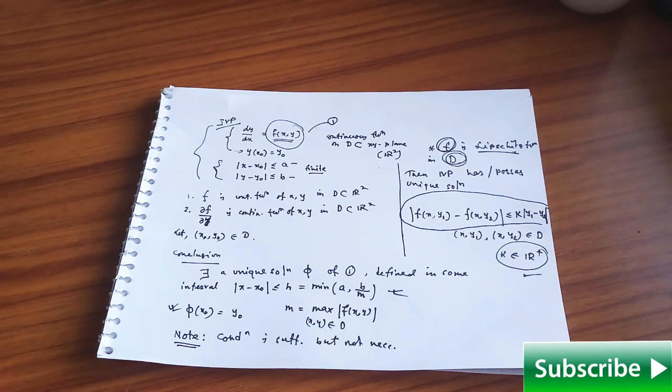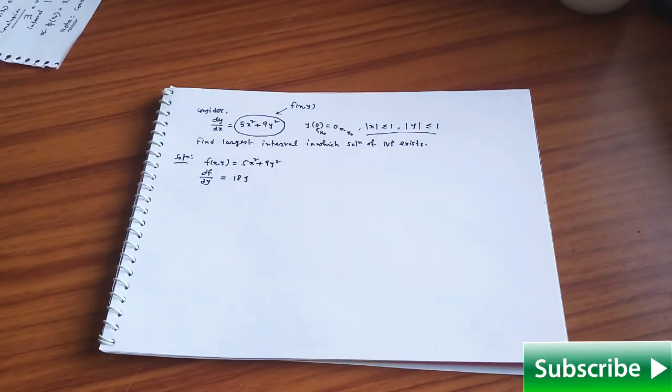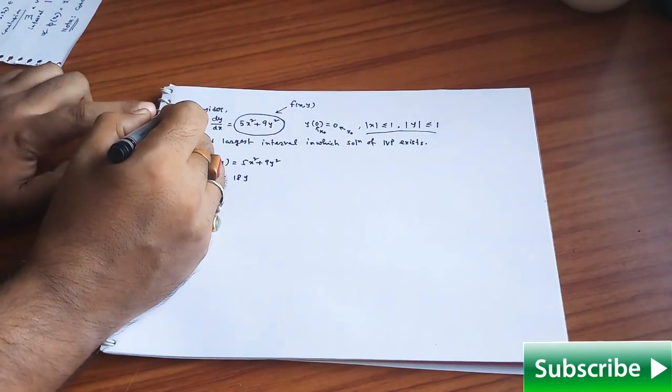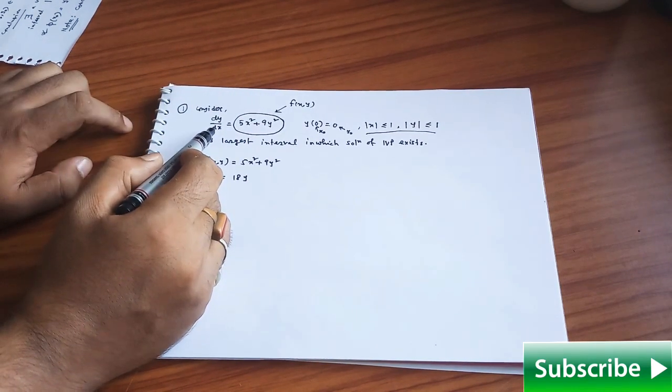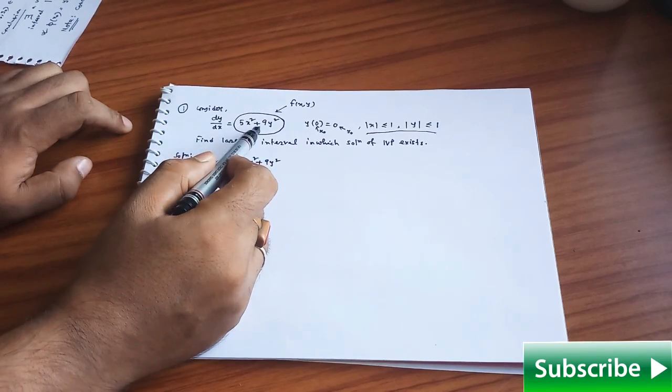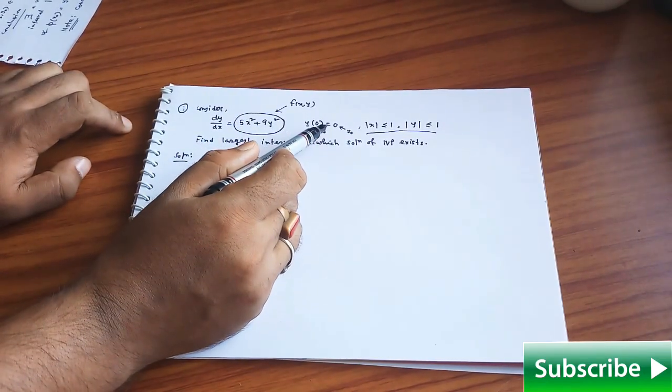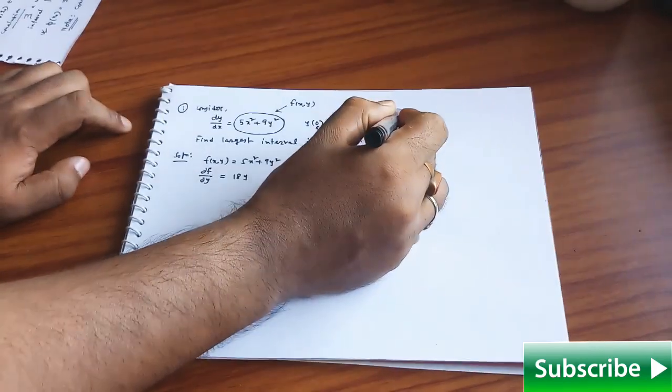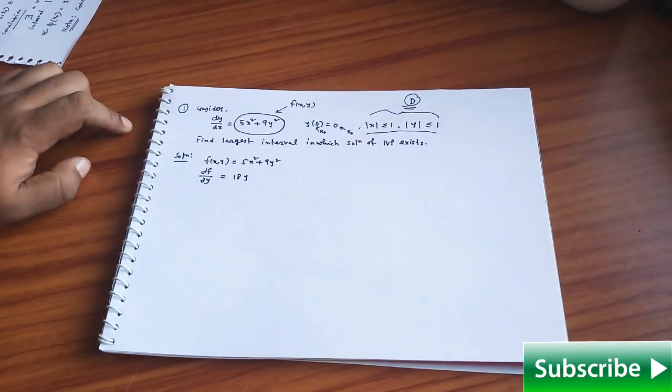This is all about in yesterday's video and now we will come to solve another problem. In fact, the first problem of this topic, I am taking a very easy problem first one consider this initial value problem dy/dx = 5x² + 9y² and this is your initial condition y(0) = 0 and this is in fact, this condition means you have your d in your hand means the domain is given in your hand.